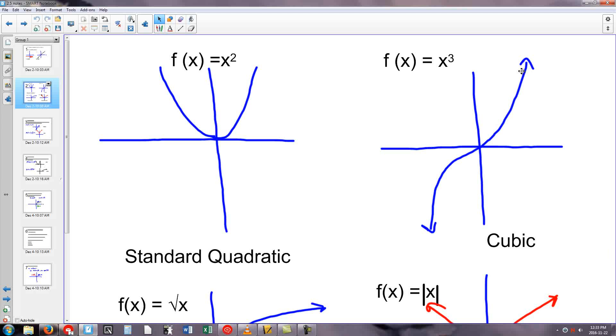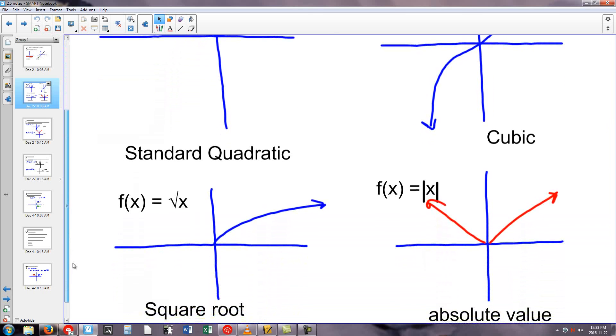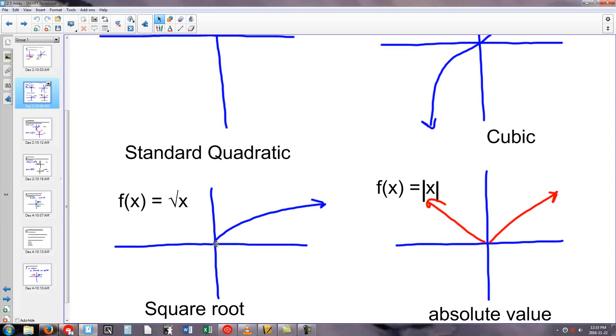There's the cubic, which is this sort of zigzag that goes through the center there. We have the square root function, which looks like a parabola on its side, but it's only half the parabola. So just kind of think about that motion there. And then the last one is the absolute value function, which is a nice v-shape to it. So these are our different standard shapes that we're going to be working with today.